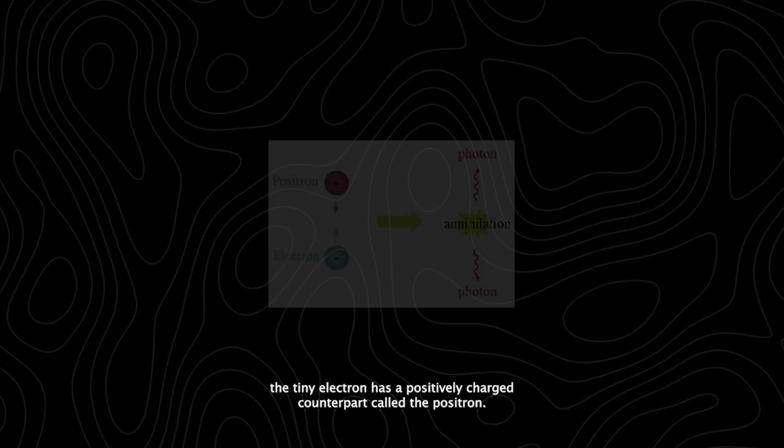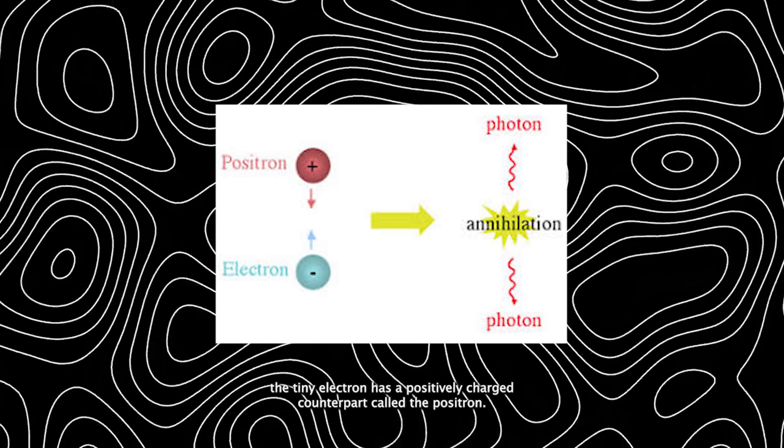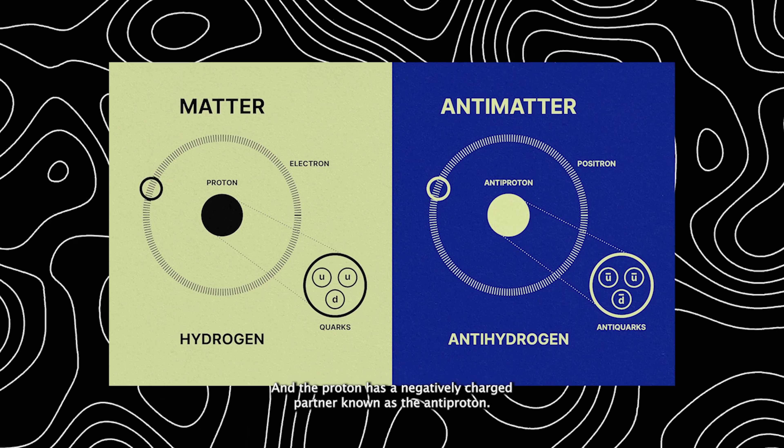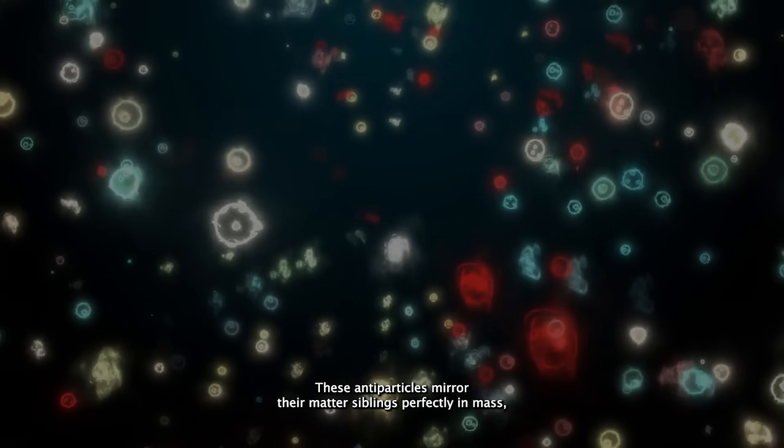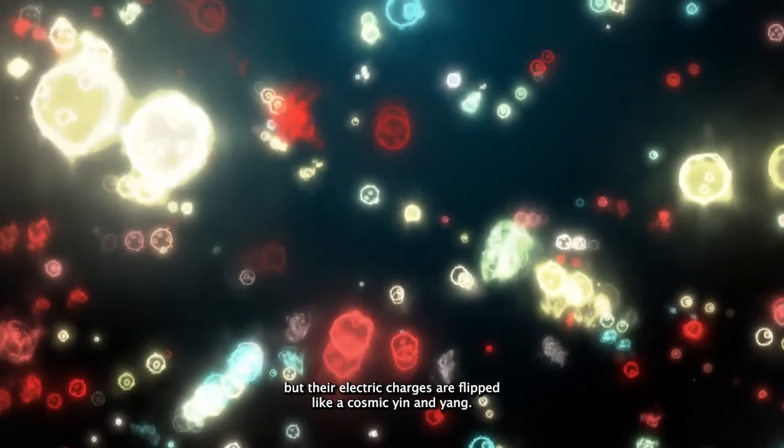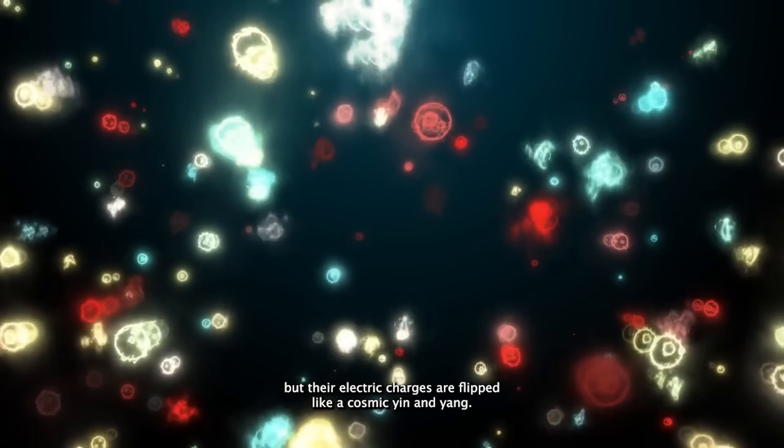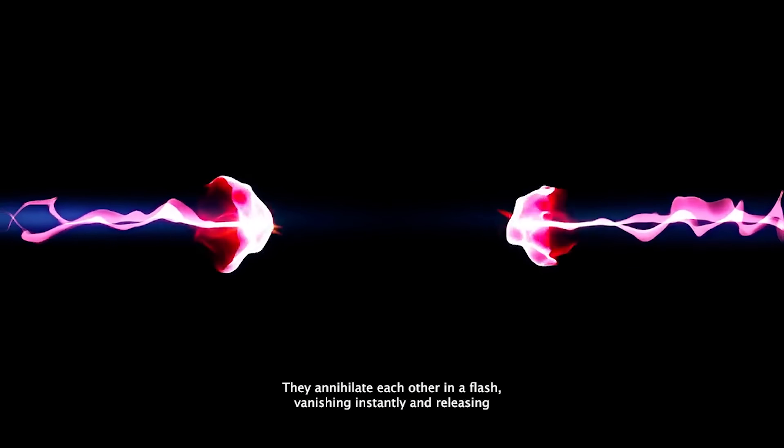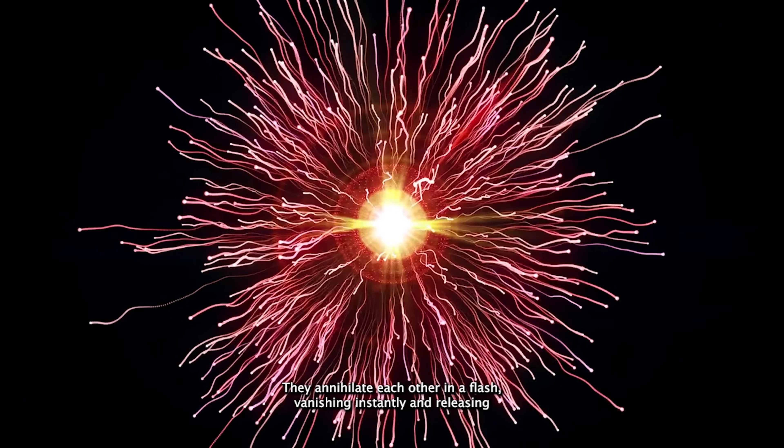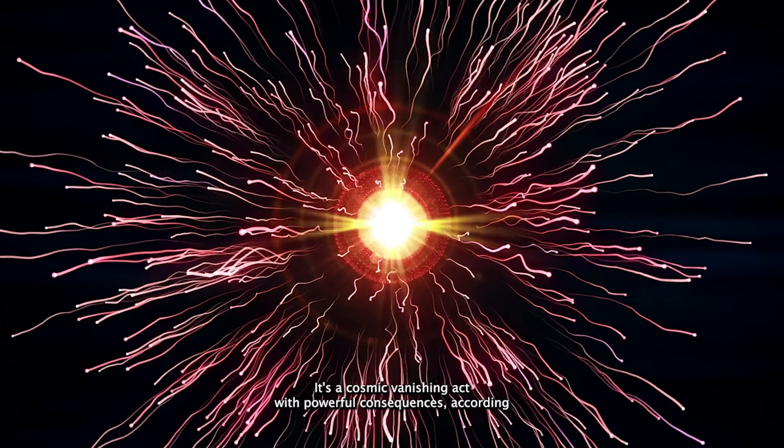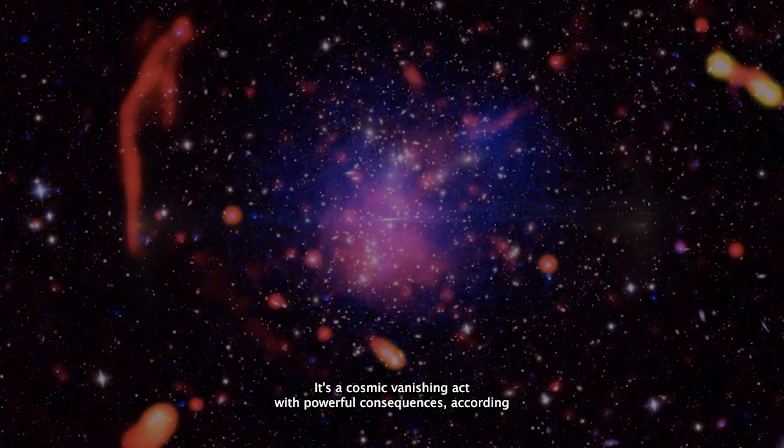For example, the tiny electron has a positively charged counterpart called the positron, and the proton has a negatively charged partner known as the antiproton. These antiparticles mirror their matter siblings perfectly in mass, but their electric charges are flipped like a cosmic yin and yang. When a particle meets its antiparticle, something dramatic happens. They annihilate each other in a flash, vanishing instantly and releasing bursts of energy, usually in the form of high-energy radiation. It's a cosmic vanishing act with powerful consequences.